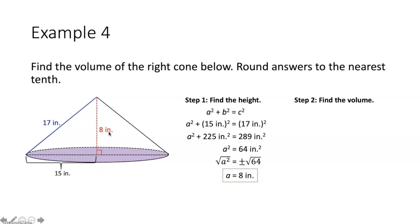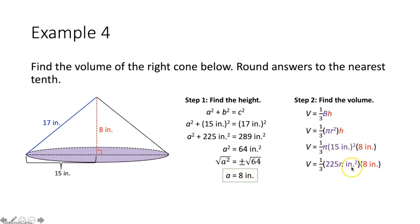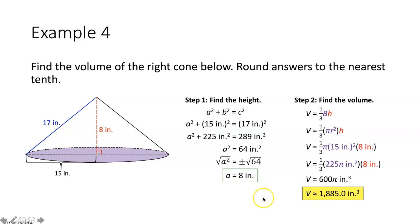Now with height = 8 inches and radius = 15 inches, we find the volume. V equals one-third times π times 15² times 8. Fifteen squared times π equals 225π square inches. One-third times 225π times 8 gives an exact volume of 600π cubic inches. Rounded to the nearest tenth, the volume is approximately 1,885.0 cubic inches.